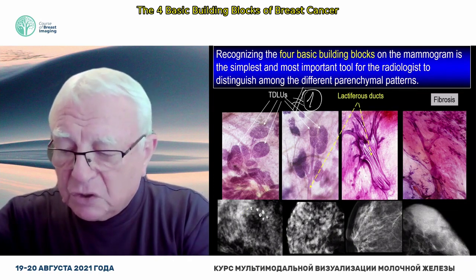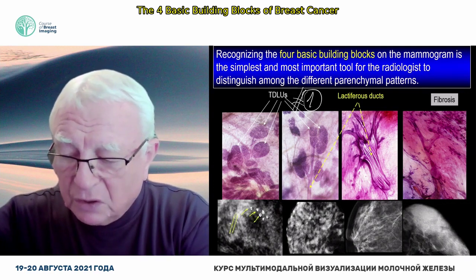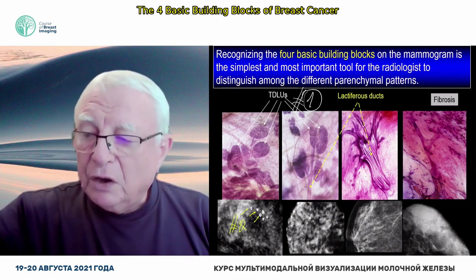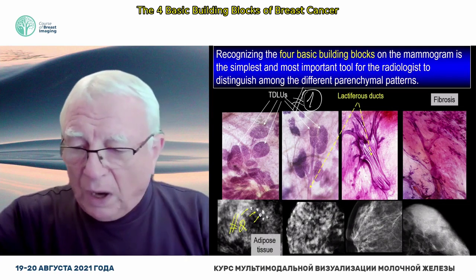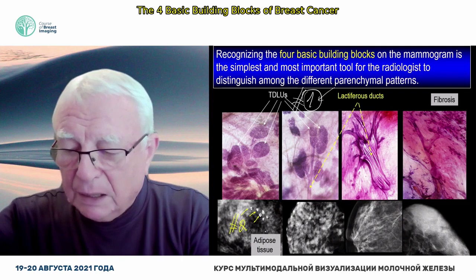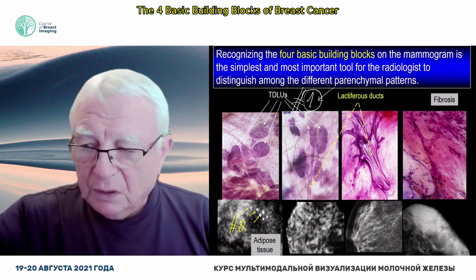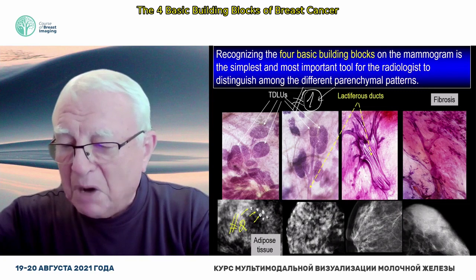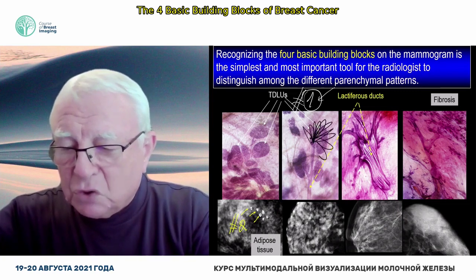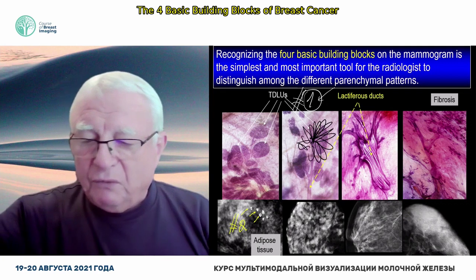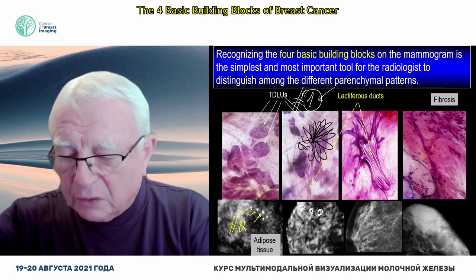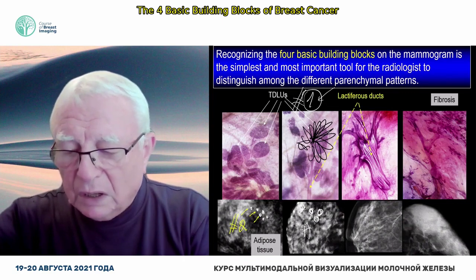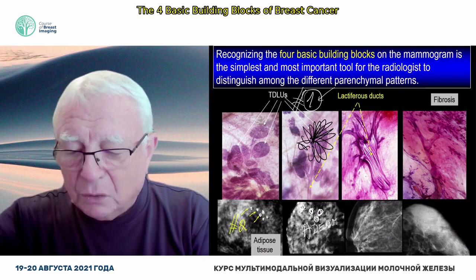How can I distinguish one from another? Because there is another building block — our friend, the adipose tissue. While the TDLU is radio-opaque, adipose tissue is radiolucent. If you have 120 terminal ductolobular units, those units are larger — that's what we call adenosis. So we have managed building blocks one and two.